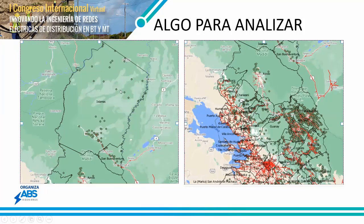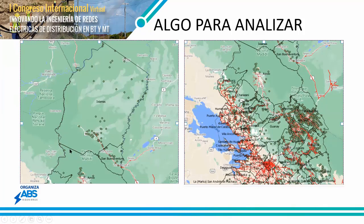Esta parte de mi departamento podríamos decir que es virgen porque no hay muchos caminos, pero hay comunidades pequeñas. Aquí hay un parque nacional — el Madidi. Hay dos comunidades: San Fermín y Cucuzlanza, que son fronterizas con Perú. La red más cercana debe estar a unos 50 o 60 kilómetros. Para poder extender y suministrar energía eléctrica a estas dos comunidades tendríamos que pasar por todo el parque nacional, lo que conlleva una licencia ambiental categoría 3 por la deforestación necesaria, y el costo-beneficio es muy alto.